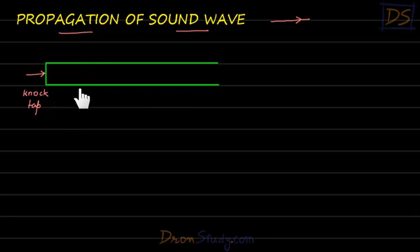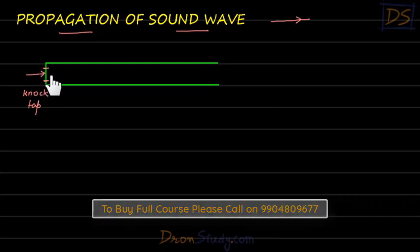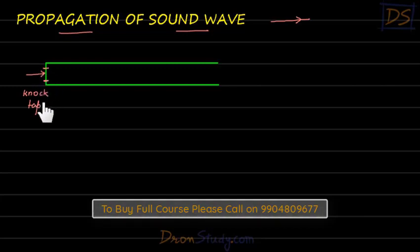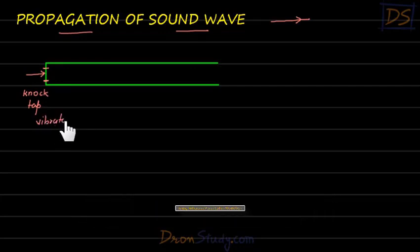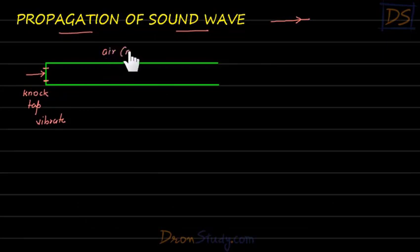When you knock on this membrane, the membrane begins to vibrate rapidly. You can't see it vibrate because it vibrates very quickly and in tiny amounts. Because of this vibration of the membrane, the surrounding air molecules also start to vibrate. These air molecules collide with and cause the next air molecules to vibrate.